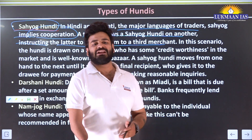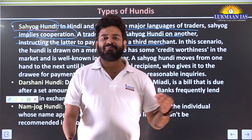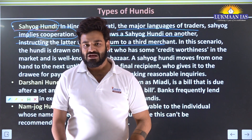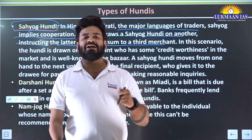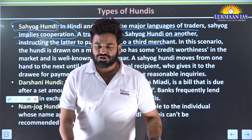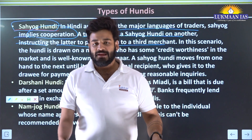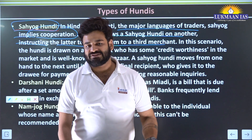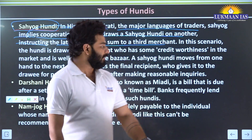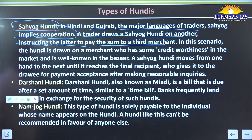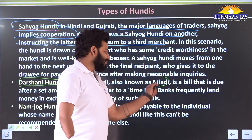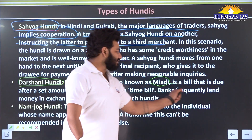Sahyog means support or help - for example, 'We came here to do business but have brought less money; please issue a Sahyog Hundi in our name, and once we reach our location we will transfer it back to you ASAP.' The second type is Darshani Hundi, also known as Miyadi.